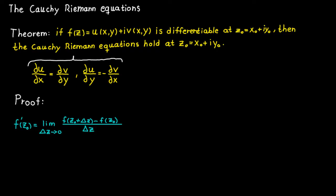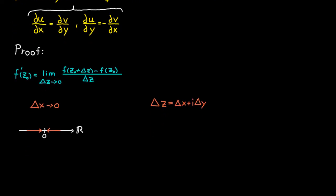There is one big difference between taking the derivative for a complex function and taking the derivative for a real value function. When you took the derivative for a real value function you simply let delta x approach zero, and this could be done in two ways: either from the left or from the right. This comes from the fact that a real number can be represented on a line. But this all changes when we are talking about complex numbers, since a complex number needs two lines to be represented — a real value line and the imaginary line.